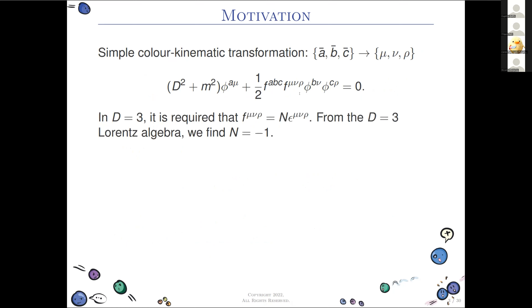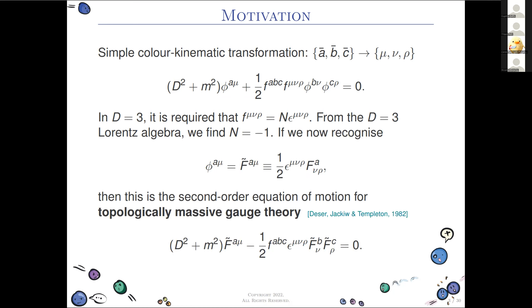We need to identify what this new structure constant is — one that now has kinematic indices. If you look at the Lorentz algebra in 2+1 dimensions, this turns out to be minus epsilon-mu-nu-rho. You could have guessed this anyway because this is a completely antisymmetric three-form and in three dimensions it has to be proportional to the Levi-Civita. The coefficient is minus one from the Lorentz algebra, which is obviously a kinematic algebra.